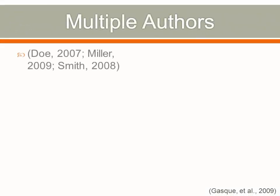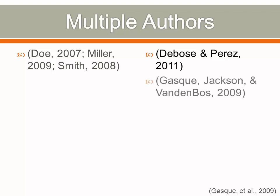If more than one author is attributed to an idea, all authors are given credit. The citation for each author is provided in alphabetical order, not by date, and within the same parentheses. When your source has only two authors, include both names every time you cite. When your source has three or more authors, cite all authors the first time; after the first citation, include only the first author followed by "et al." with a period, then the year.